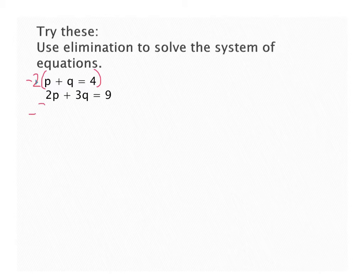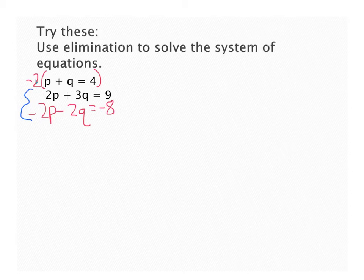So I'm going to have negative 2p minus 2q equals negative 8. Everything gets multiplied by that negative 2. But now I have this right here as my new system of equations. Those two equations there. Let's add them together.